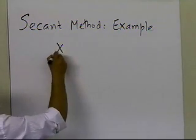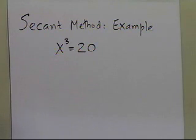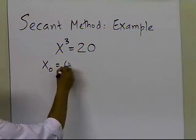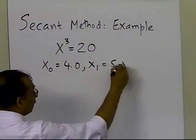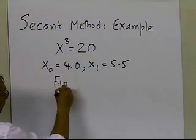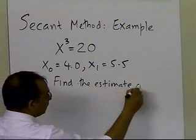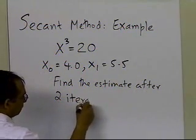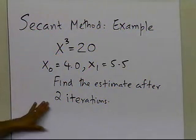So let's suppose somebody says, x cubed is equal to 20 — find the root of this equation. You are given the initial guesses: x0 is given as 4.0, x1 is given as 5.5. And somebody is saying, find the estimate after two iterations.